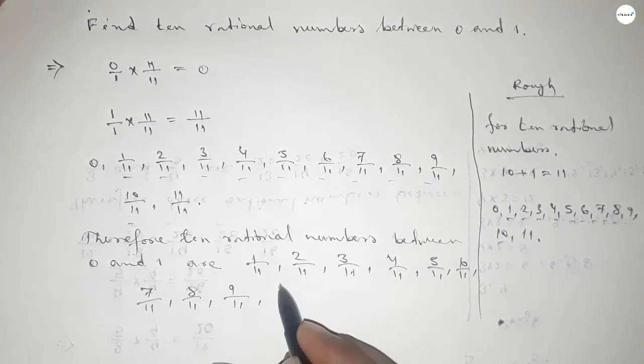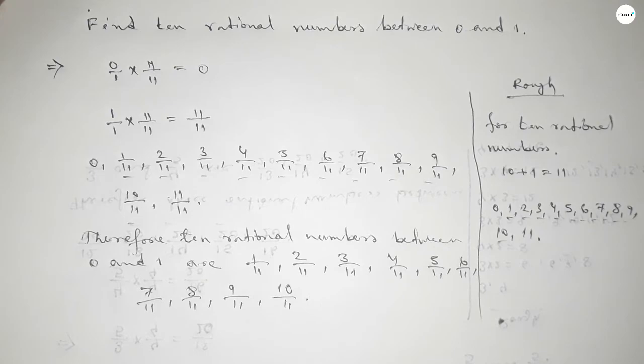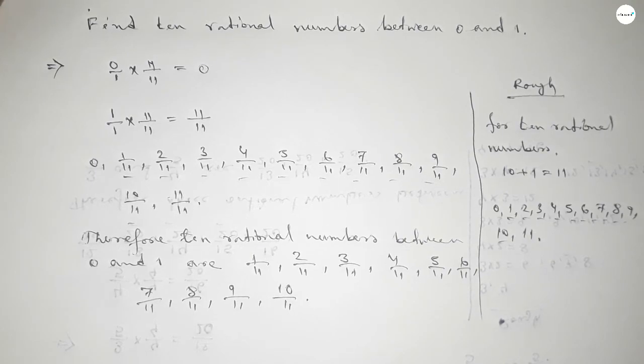9 over 11, and last one 10 over 11. So this is the process to find out 10 rational numbers between 0 to 1. That's all, thanks for watching.